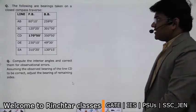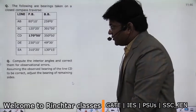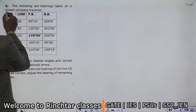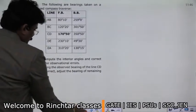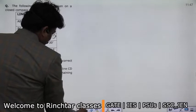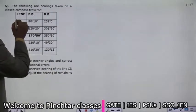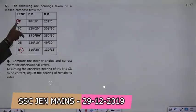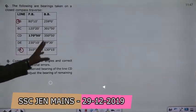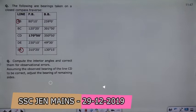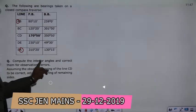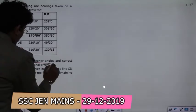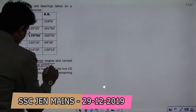In the question, you have got bearings in lines AB, BC, CD, DE and EA. This is a closed compass traverse. The data will create a closed traverse. Compute the interior angles and correct them for the observational errors.